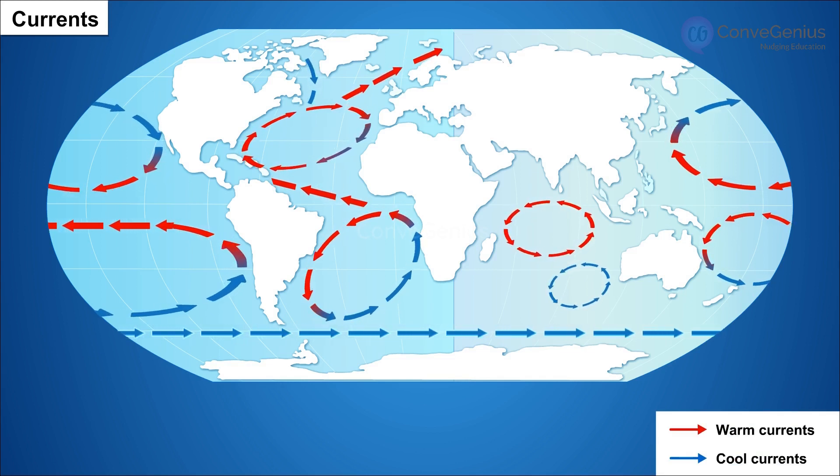For example, the Gulf Stream current. The warm current spreads warmth in the nearby land.